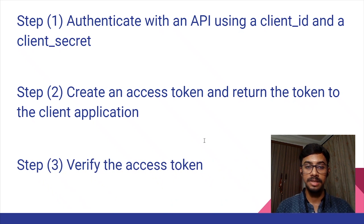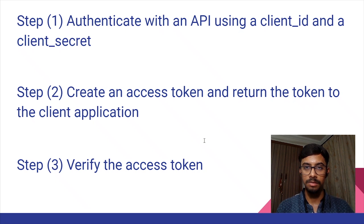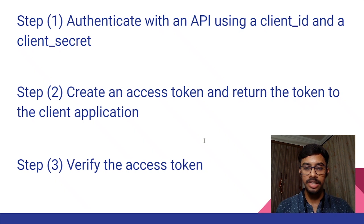The third and final step is to verify the access token when the client application wants to use a resource. We need to verify that the client's token is valid. The token is passed to the token server to be verified. If successful, an appropriate response is relayed to the client app with the relevant authorization metadata. At that point the client application can decide within its business logic whether to give access or not. This was a simple example implementation of an access token server.